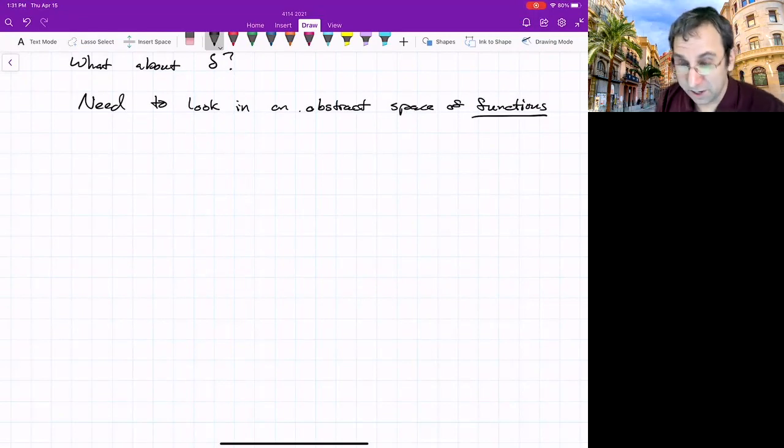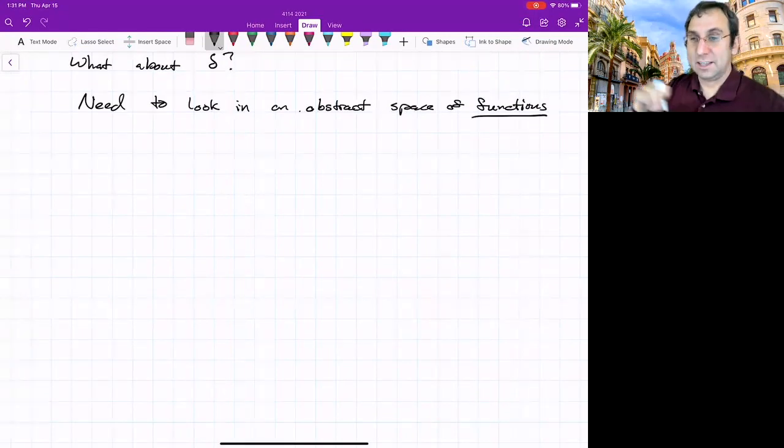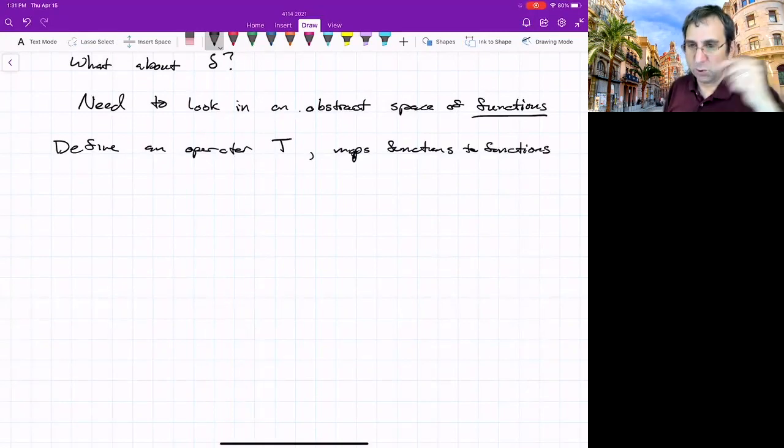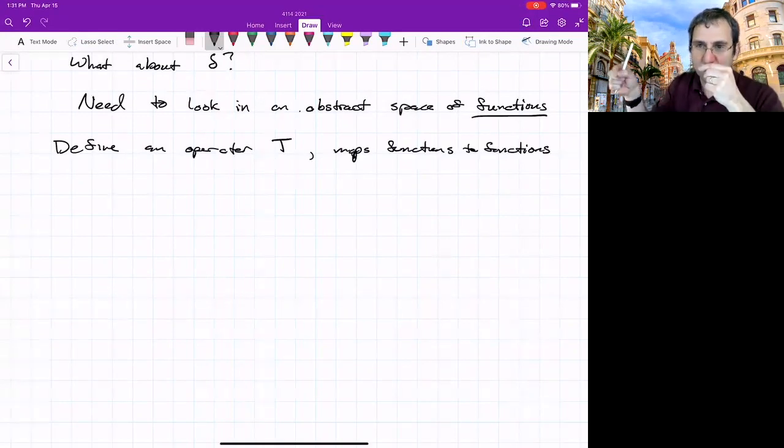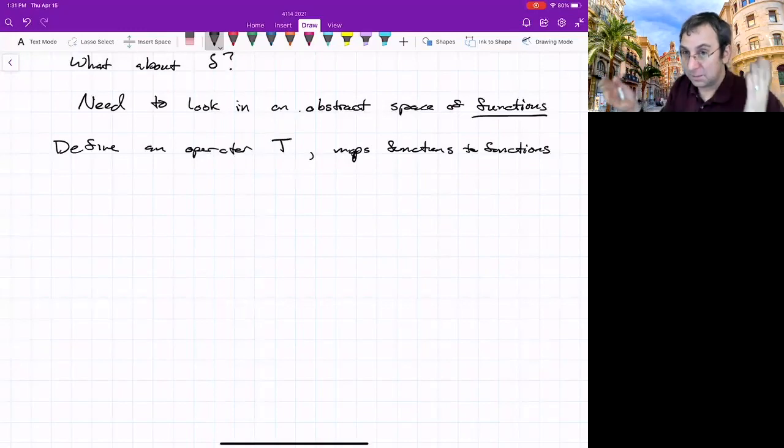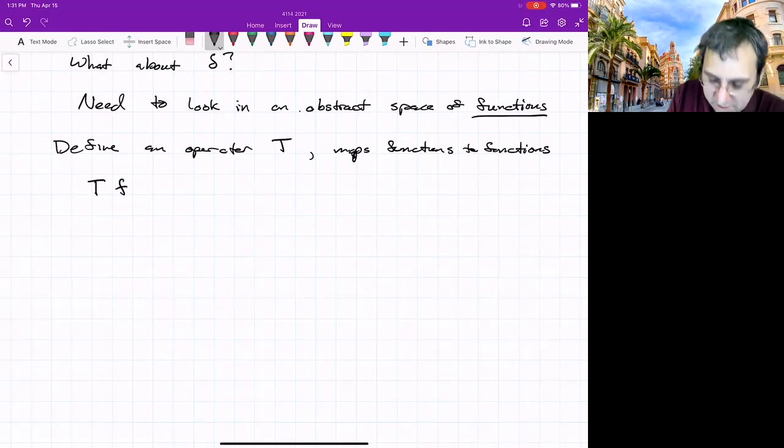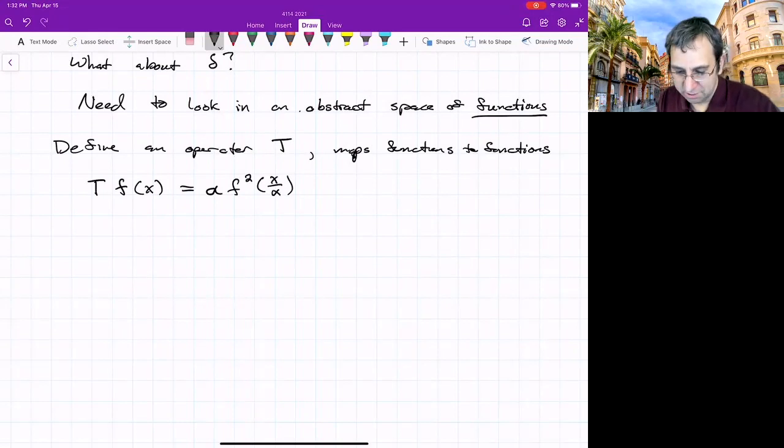So we're going to define an operator that operates in this space of functions. We'll call it T. And what it does is it maps functions to functions. So it takes points in this space and maps them to other points in this space. In some sense, it's a map on the space of functions. And here it is. We'll define it this way: T of f of x. So we take in that function and it gives us alpha f squared of x over alpha. So for any function, you could define this. And alpha is the same alpha from what we have said above.